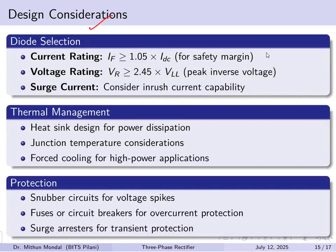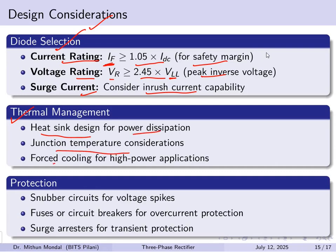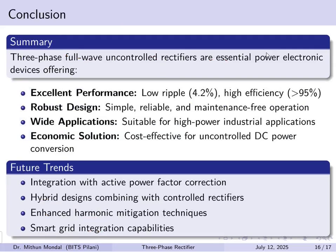For design considerations, diodes must be selected based on current rating with a safety margin — the forward current rating should be greater than 1.05 times the DC current. The voltage rating should exceed 2.45 times the peak inverse voltage. Surge current capability must be considered. Thermal management requires proper heat sink design for power dissipation, junction temperature consideration, and cooling for high-power applications. Protection measures include snubber circuits for voltage spikes, fuses or circuit breakers for overcurrent protection, and surge arresters for transient protection.